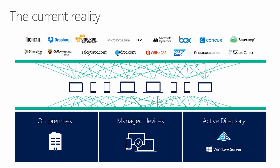This diagram is a possible representation of your current environment. When we have multiple cloud applications, multiple devices accessing those cloud applications, you have your on-premises legacy applications, some managed devices possibly enrolled in mobile device management or another device management solution, and Active Directory or another directory system with identities. You might have managed devices, but you might also have unmanaged devices accessing these cloud applications. The question is how can we control this — and that's where Azure Active Directory Premium Conditional Access comes into play.